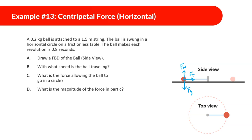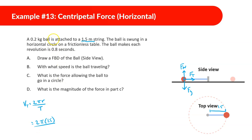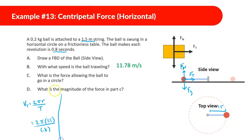With what speed is the ball traveling? We know the tangential velocity equals 2πr divided by the period T. The radius is the string length, 1.5 meters, and the period is 0.8 seconds. So: 2π times 1.5 divided by 0.8, which gives approximately 11.78 meters per second.